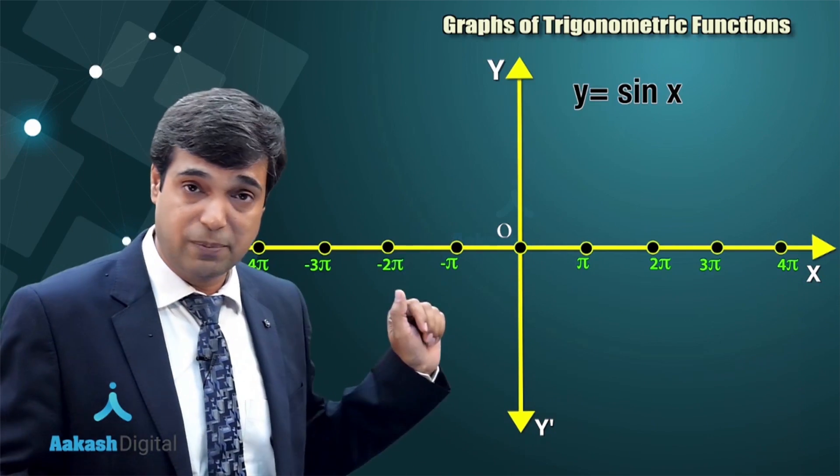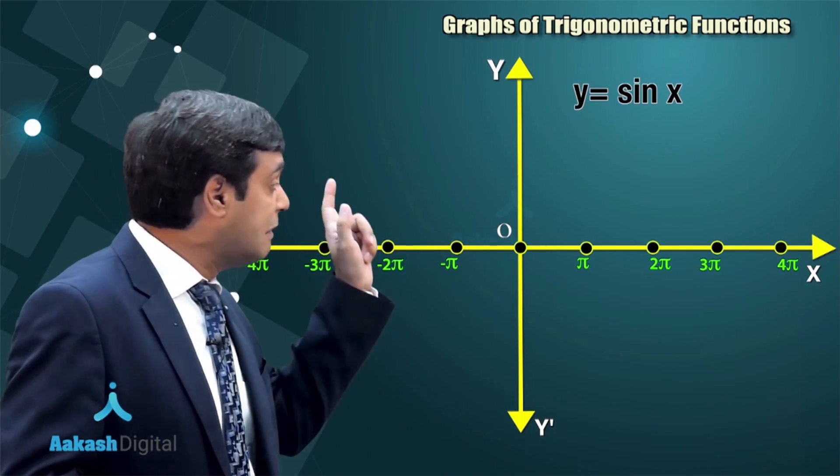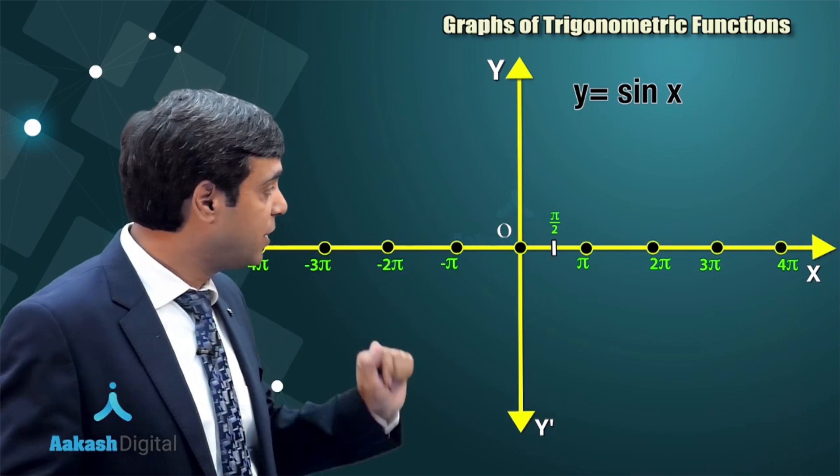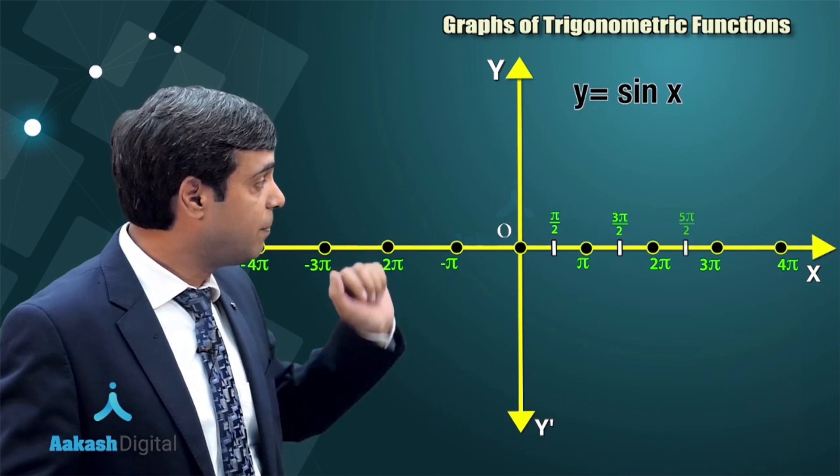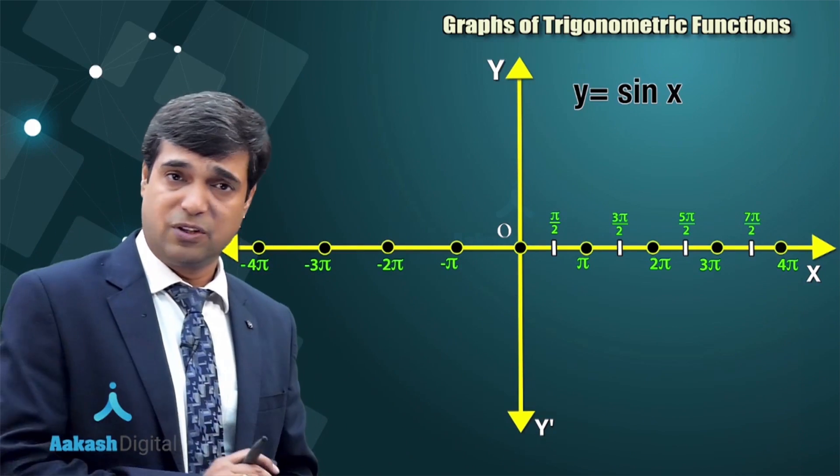Like pi/2, 3pi/2, so just mark lines between 0 and pi. That is pi/2, 3pi/2, 5pi/2, 7pi/2 - the odd multiples of pi/2.